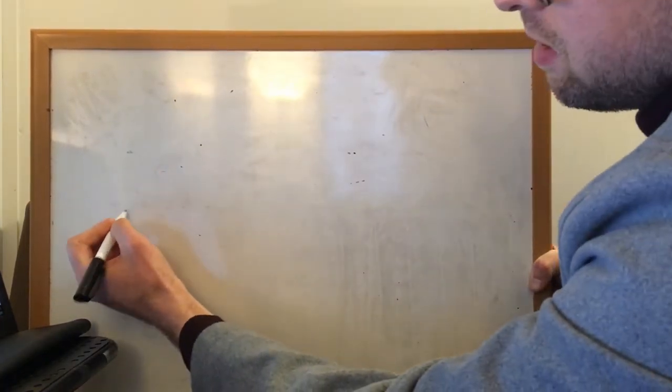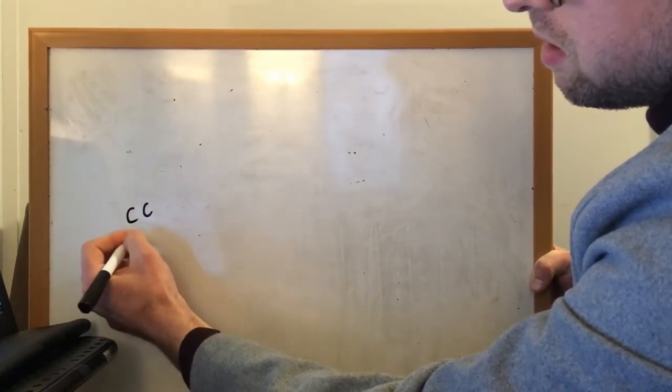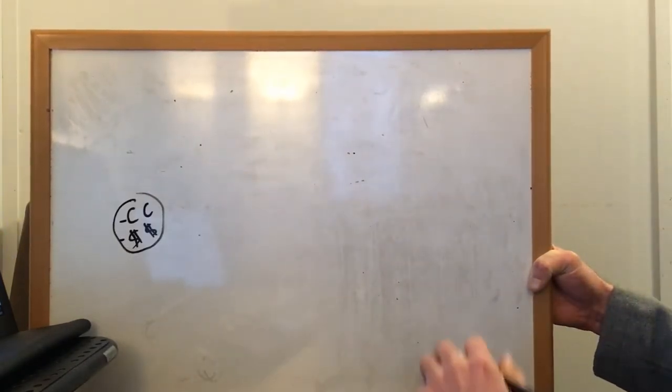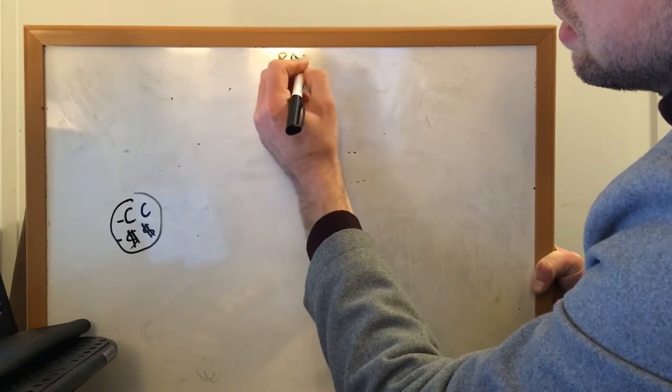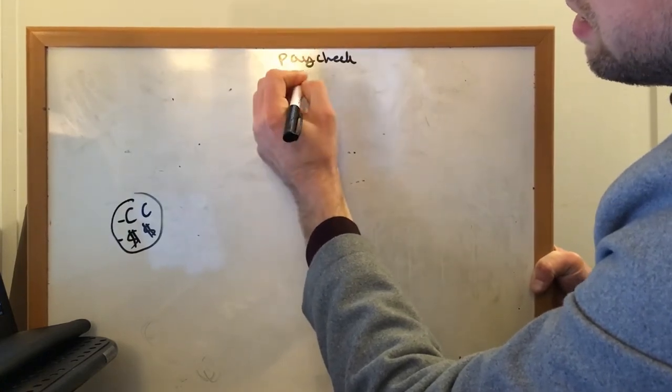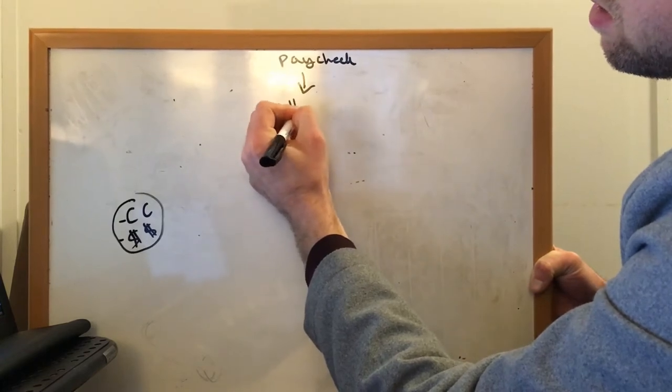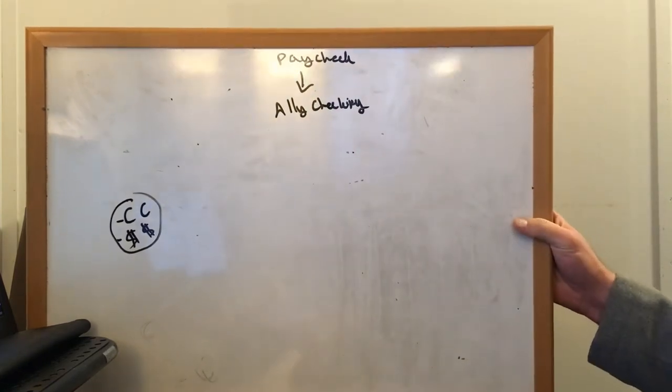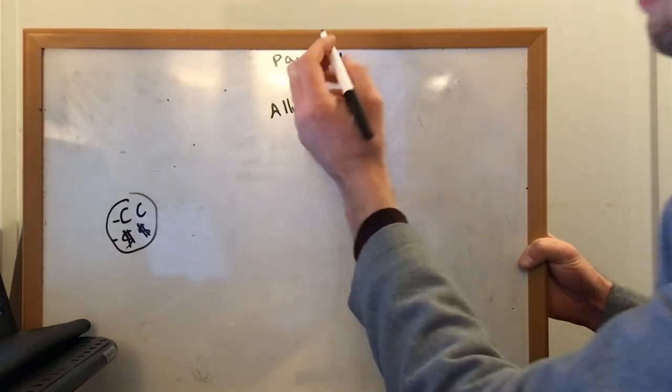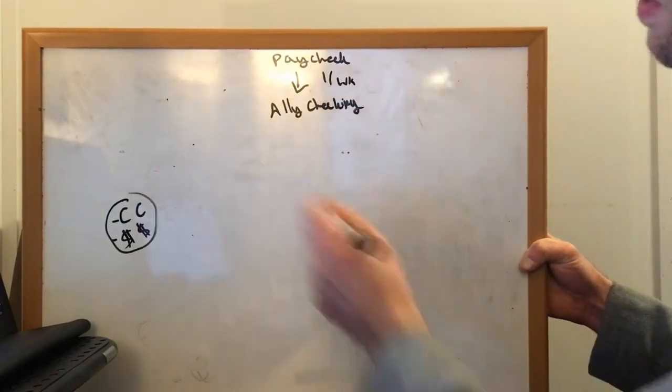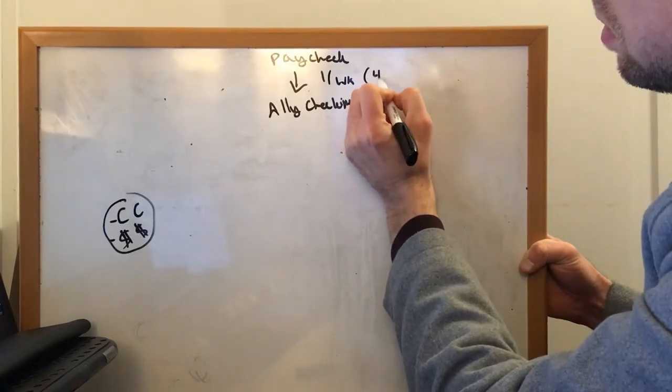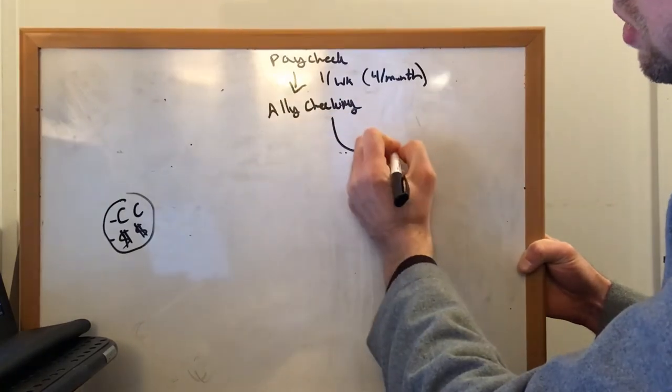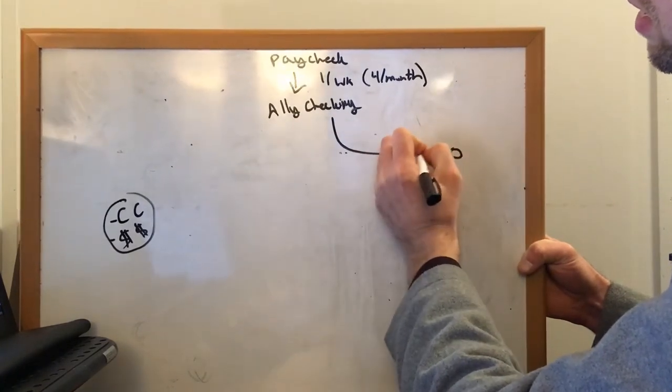Now, what happens is I have some credit card debt, negative, negative, smaller though, because I've paid a lot of it off. I have my paycheck coming in to my Ally checking account. I get paid once a week or four times a month. Every week, $250 goes into this checking account.